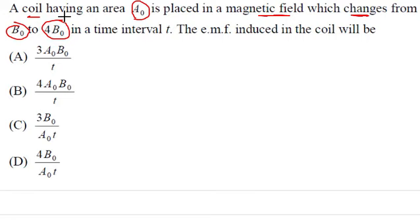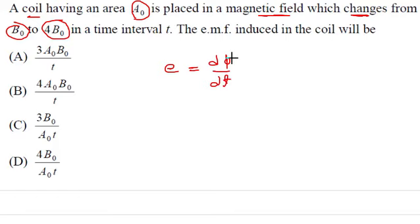If the magnetic field changes, then the flux associated with that coil due to that magnetic field also changes. The induced EMF according to Faraday's Law is E = dφ/dt. Here dφ is the change in flux and dt is the time interval.